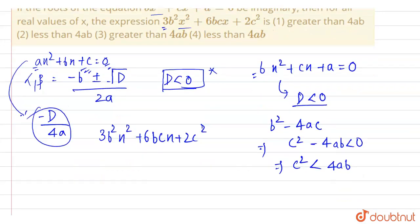So we have D as D equals b square minus 4ac for this expression. So comparing this we can write b square as 36b square c square minus 4ac. So what is minus 4ac? Minus 4 into 2 into 3.